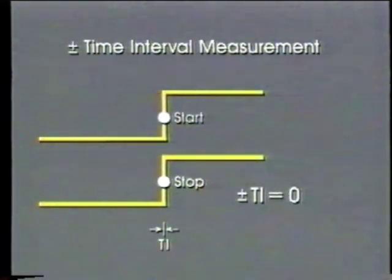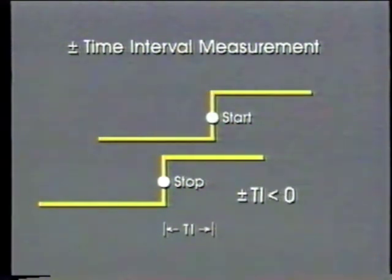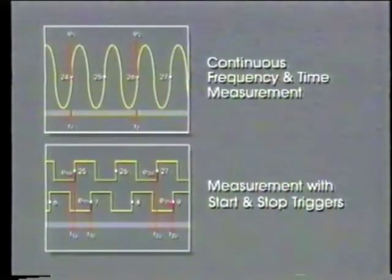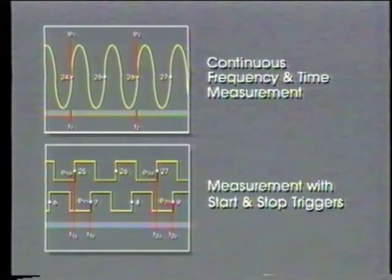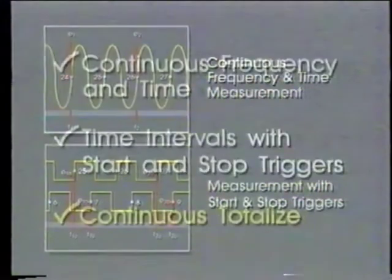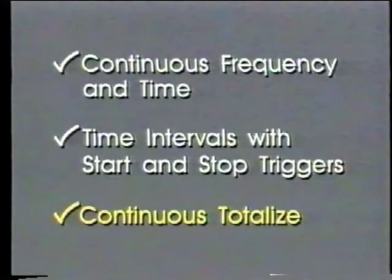Plus/minus time interval measurements are a variation on this, allowing you to measure intervals down to zero, and if a stop occurs before a start, the time interval may even be negative. All of the measurements discussed so far begin and end synchronously with an input signal trigger event, providing the highest resolution possible.